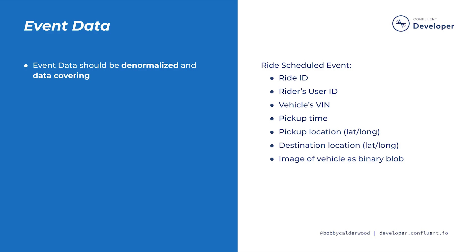For example, in our autonomous vehicle ride-sharing app Autonomo, we might have an event representing the decision to match a requested ride with a specific vehicle. The event name or type might be ride-scheduled, and the data payload could include the ride ID, the rider's user ID, the vehicle's identification number, the pickup and drop-off locations, and the pickup time. This leads us to the conclusion that events must be denormalized and data-covering, meaning all data necessary to understand the business process is contained within the events themselves.